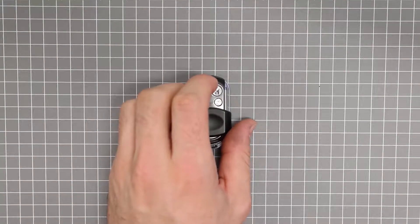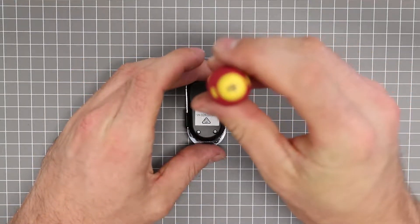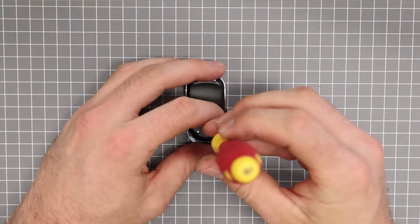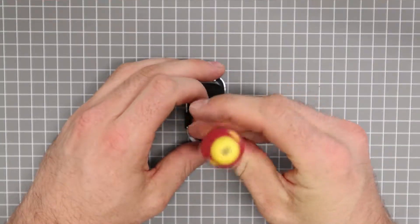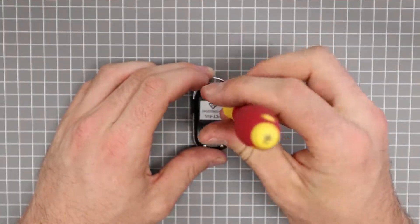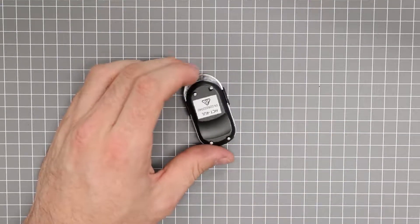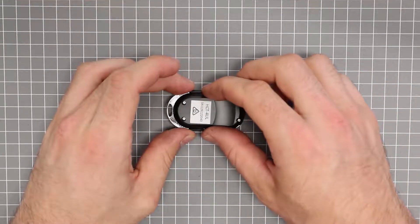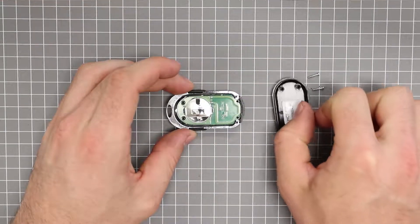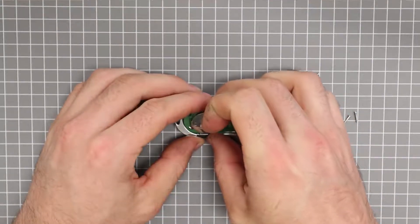To access the battery compartment on the second remote loosen all four screws on the rear of the remote and then remove the rear cover. Remove the green board from inside the remote making sure to keep track of the button pad as it may be attached.